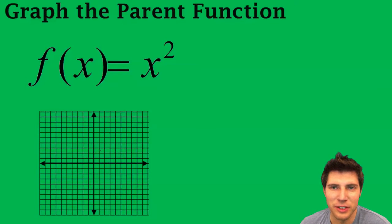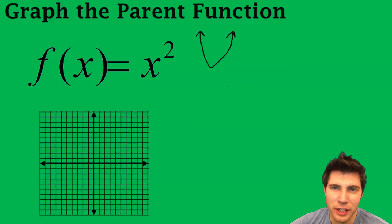Hey guys, welcome to this f of x equals x squared parent function graph problem. You're eventually going to memorize that it just makes a U shape, and you'll generally know what that U shape looks like. But I'll show you a way in case you forget that you can see it visually happening.